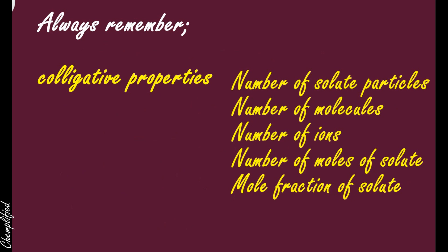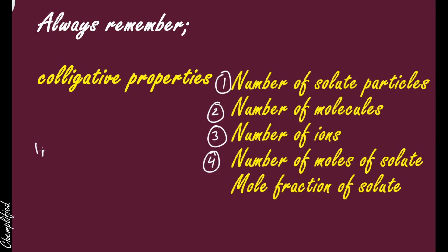By number of particles, the number of particles can be written in different forms. First, Colligative Properties depend on number of solute particles. Second, you can say number of molecules. Third, number of ions. Fourth, number of moles of solute. We know that one mole is equal to 6.022 × 10²³, sometimes written as 6.023 × 10²³.